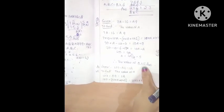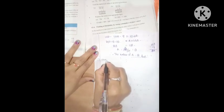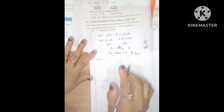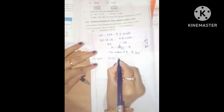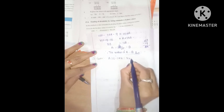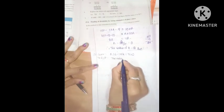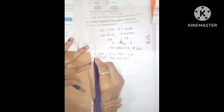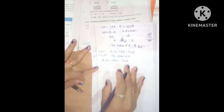Next, C. First, given data: write the given problem. One subtraction is A36 minus 1A4 equal to 742. Next, to find the value of A. Let the solution for this problem: A36 minus 1A4 equal to 742. This is the LHS part and this is the RHS part.